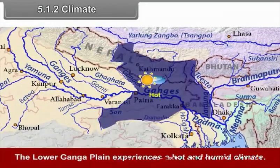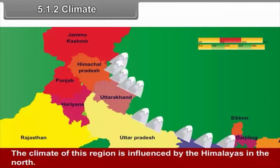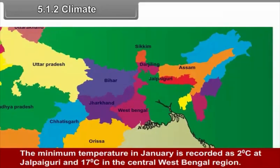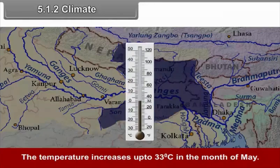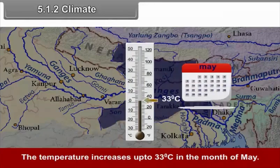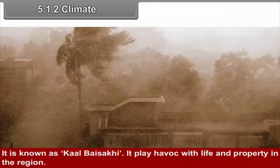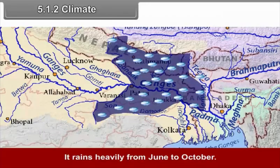The lower Ganga plain experiences a hot and humid climate. The climate of this region is influenced by the Himalayas in the north, the Bay of Bengal in the south and the Meghalaya Plateau in the east. The minimum temperature in January is recorded as 2 degrees Celsius at Jalpaiguri and 17 degrees Celsius in central West Bengal. The temperature starts rising in March and reaches up to 33 degrees Celsius in May. Heavy pre-monsoon rain occurs with thunderstorms, known as Kalbaisakhi. It plays havoc with life and property in the region. It rains heavily from June to October.